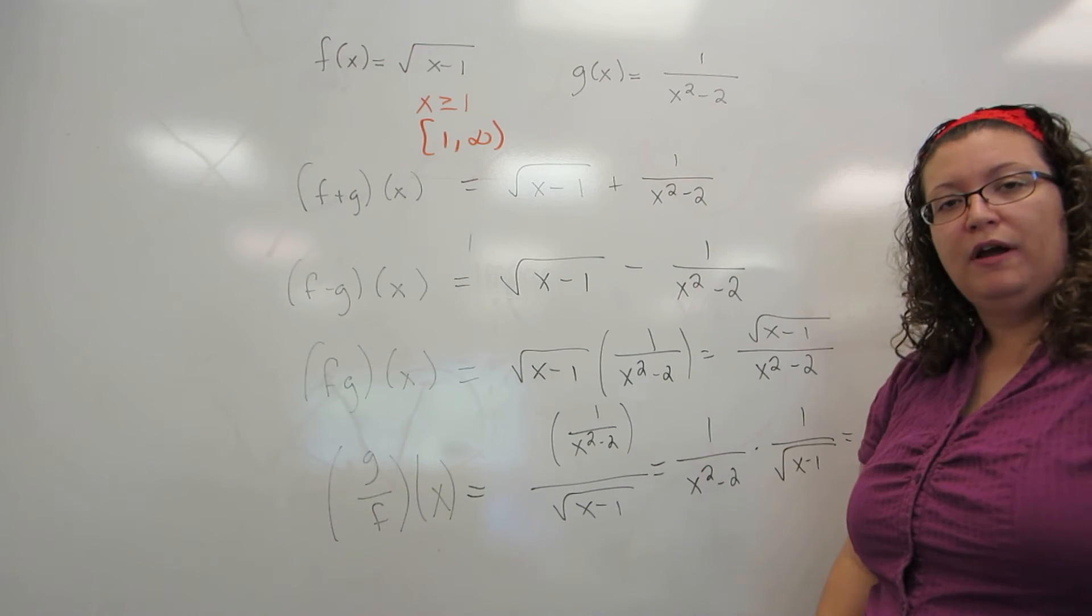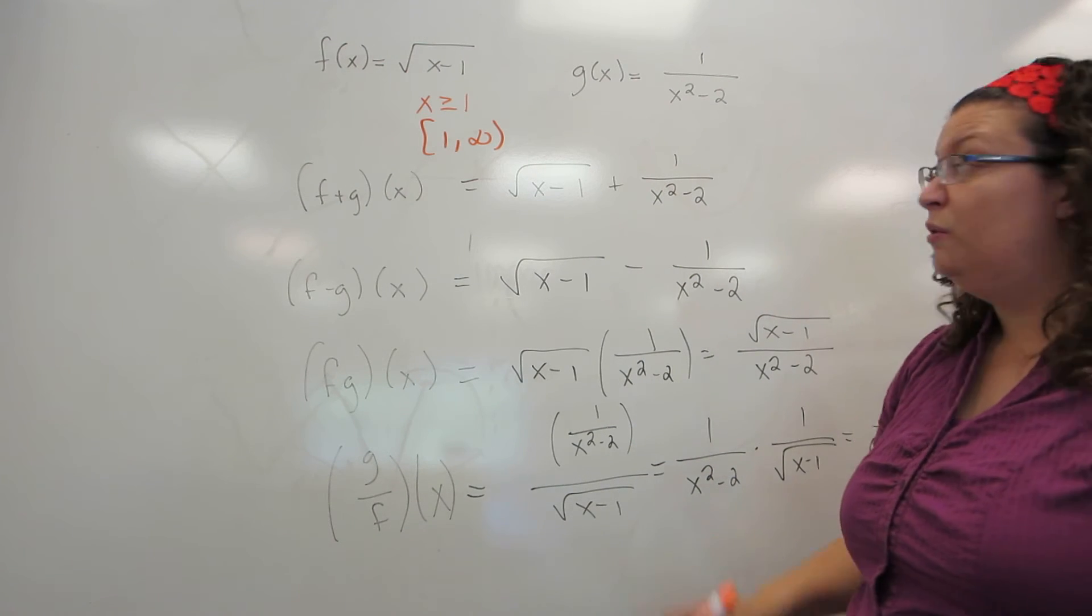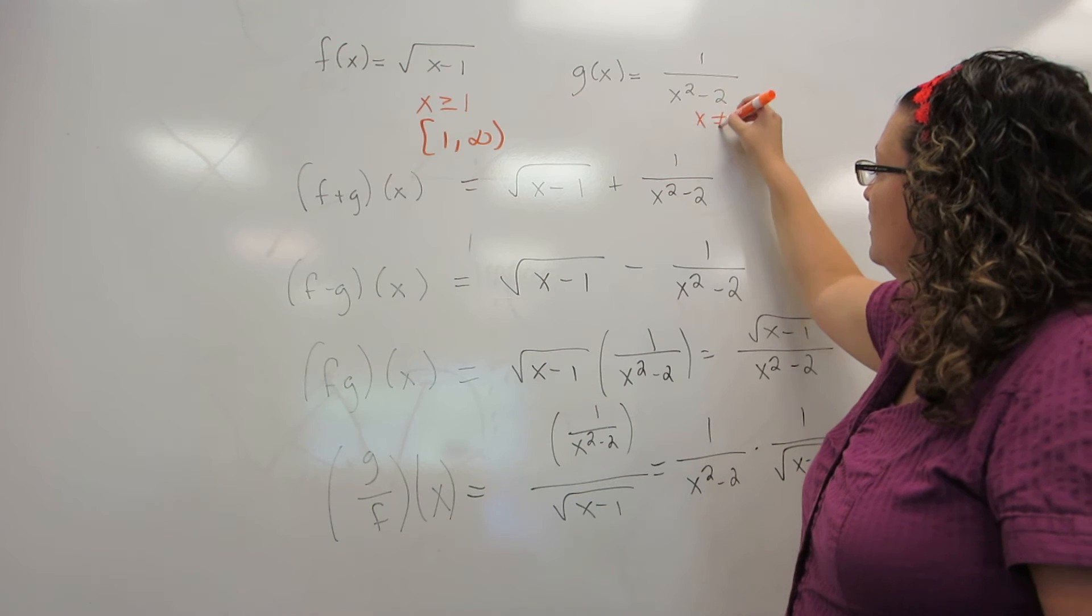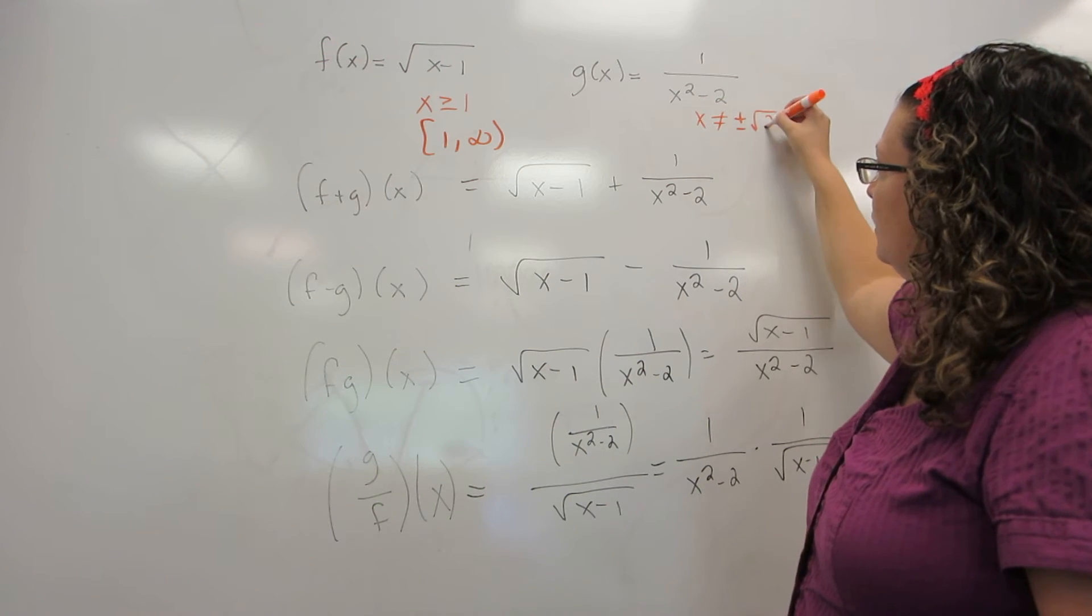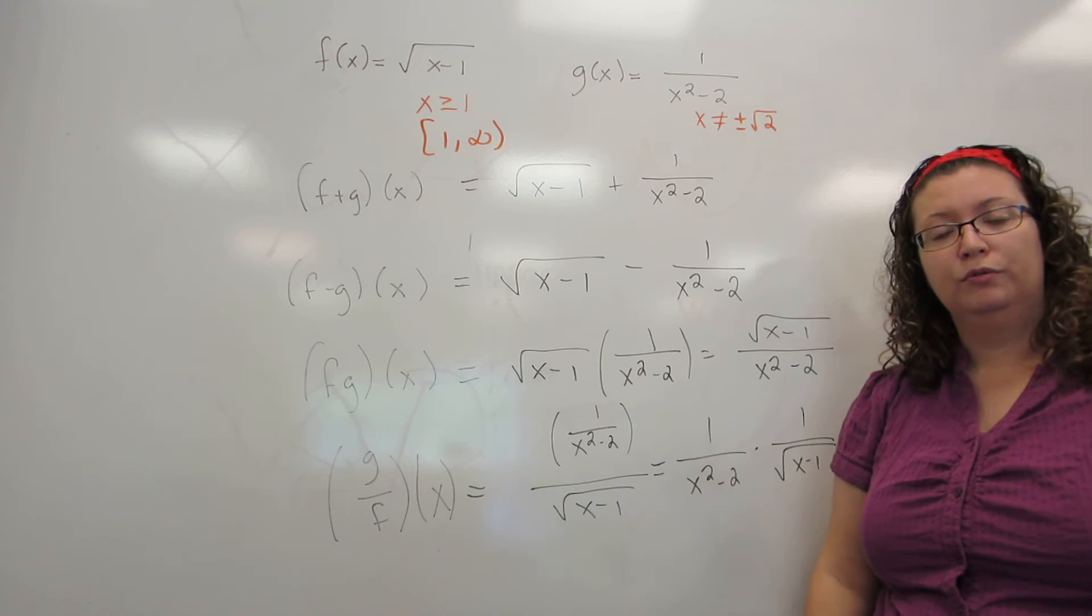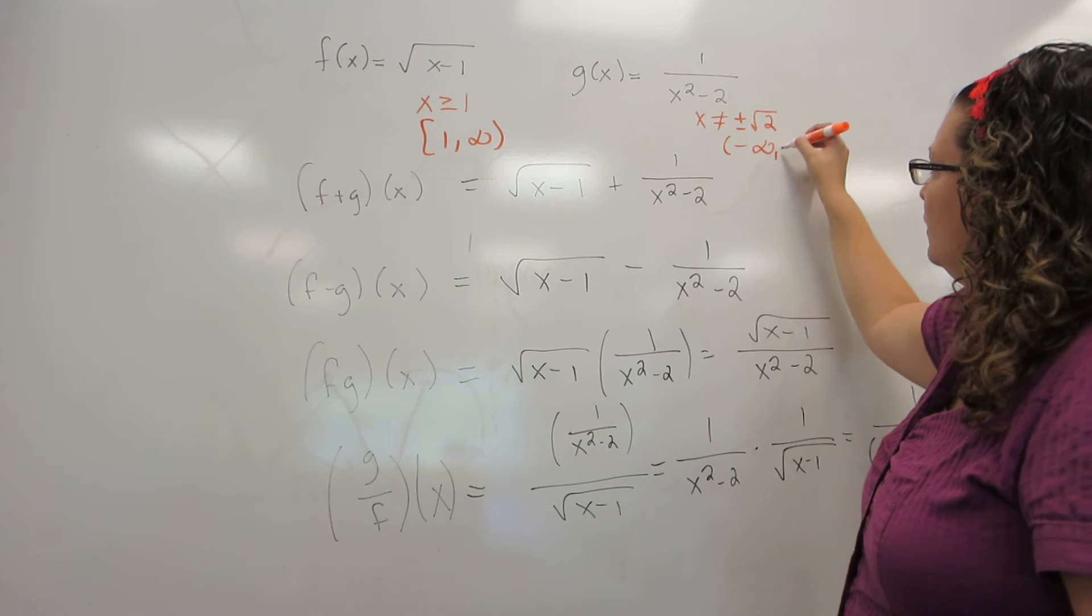G, the problem that arises is that I cannot have a zero in the denominator. So this is x is not equal to plus or minus the square root of 2. This is a little bit more complicated in interval notation.